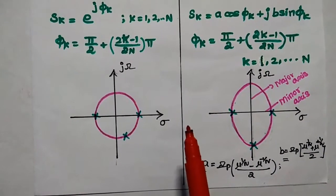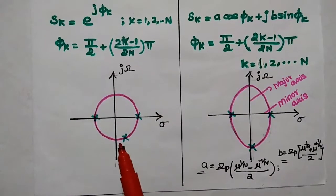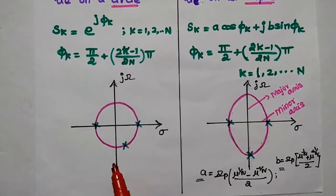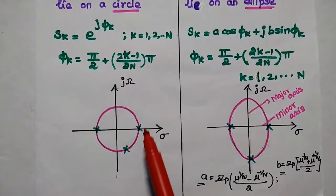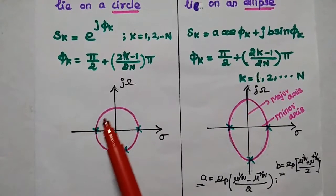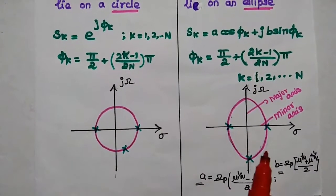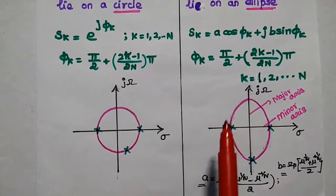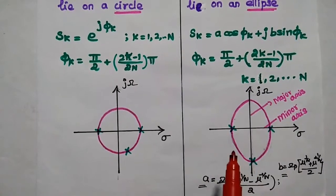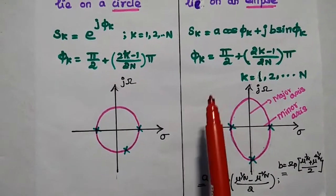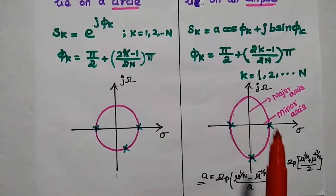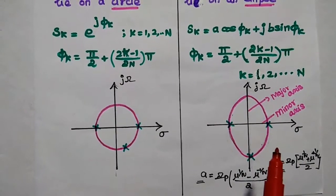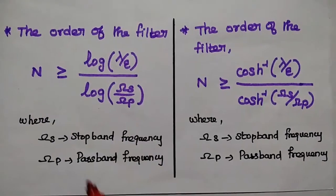This is the pole representation of the Butterworth filter and the Chebyshev filter. In the Butterworth filter, the poles lie only on the circle, but in the Chebyshev filter, the poles lie on an ellipse. Here, A and B represent the major and minor axis values of this ellipse.